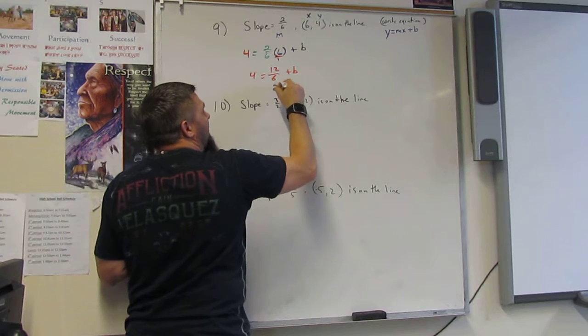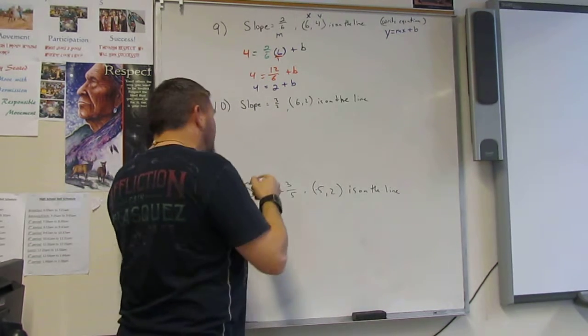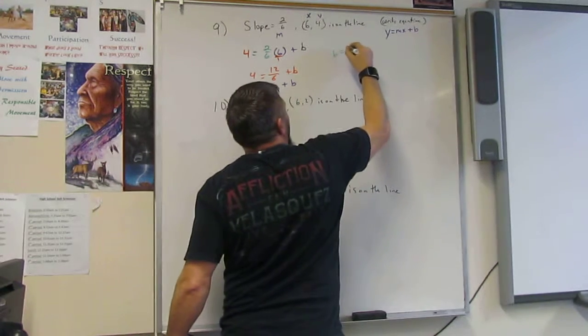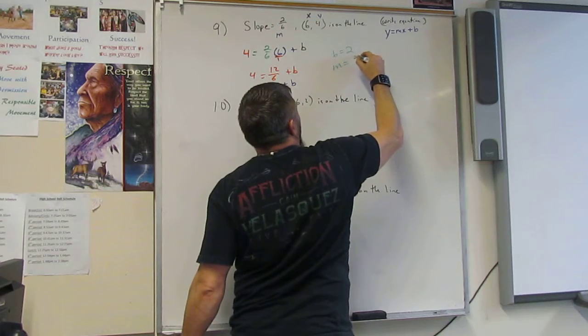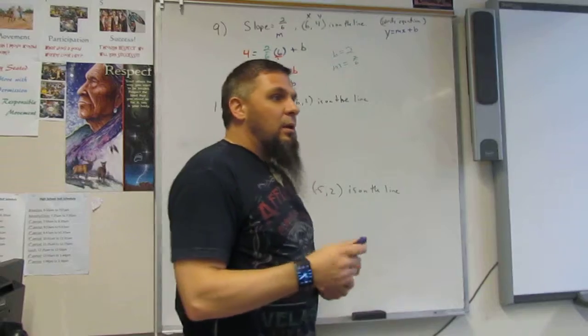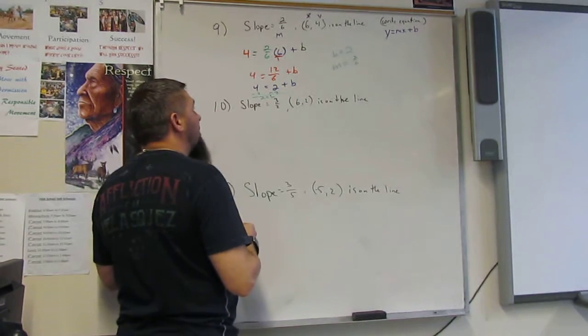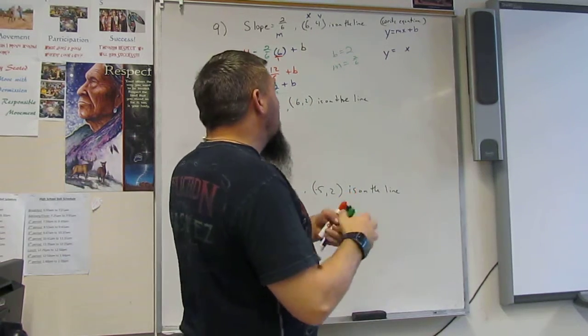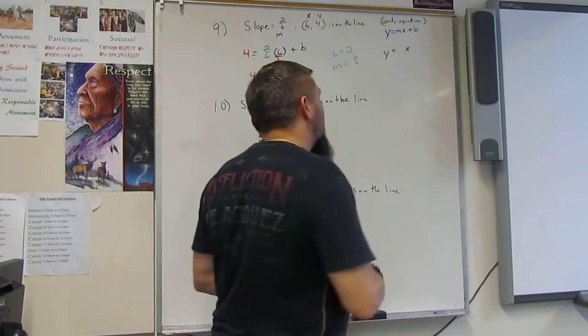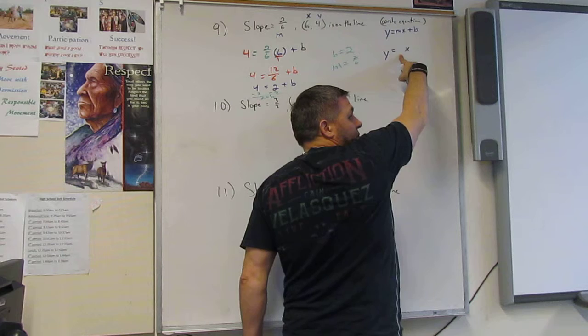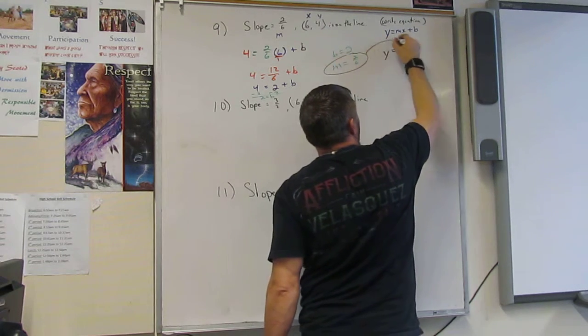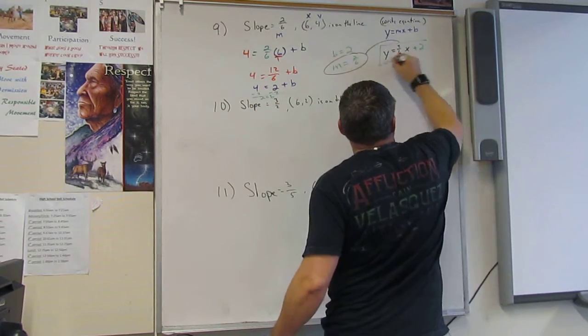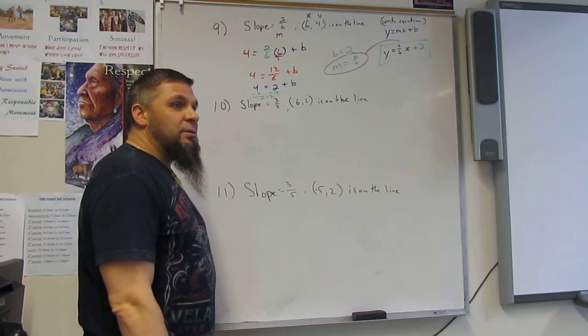6 goes into 12 twice, right? And then subtract 2 from both sides and you get 2 equals b. So b is equal to 2. m is equal to 2/6, right? So minus 2 on both sides? Yes. Minus 2 on both sides. And then that takes the 12 of the 2 and it's equal to 8. And 2 plus b. So what am I going to write next to that x? And then b is plus 2. And that's it. That's all you got to do.